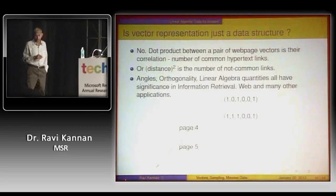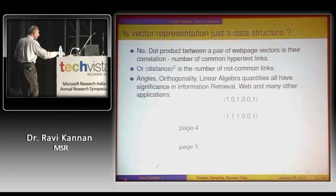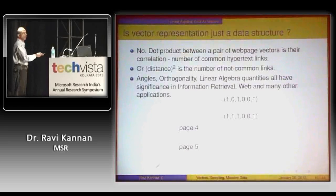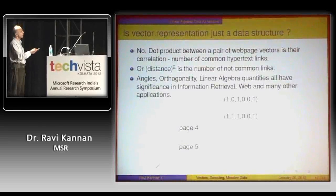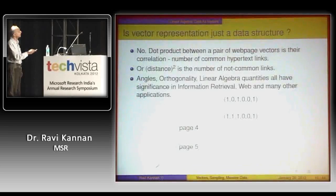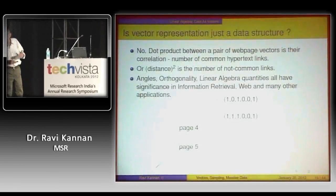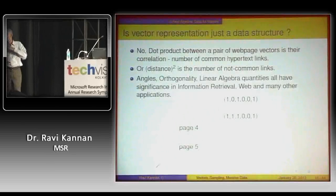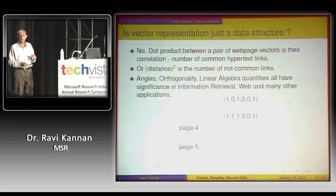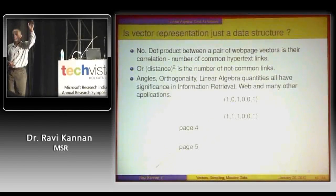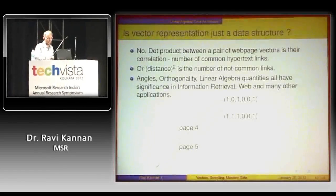If you've seen vectors, you've seen dot products. The dot product of two web page vectors gives you the number of common links — every time there's a common one, you add one. You can work out that distance means something, and when you talk about vectors, you must immediately think of the angle between them — that's also a useful concept. Originally you started with documents, not vector algebra, and somehow you realize that angles are useful quantities in that context.